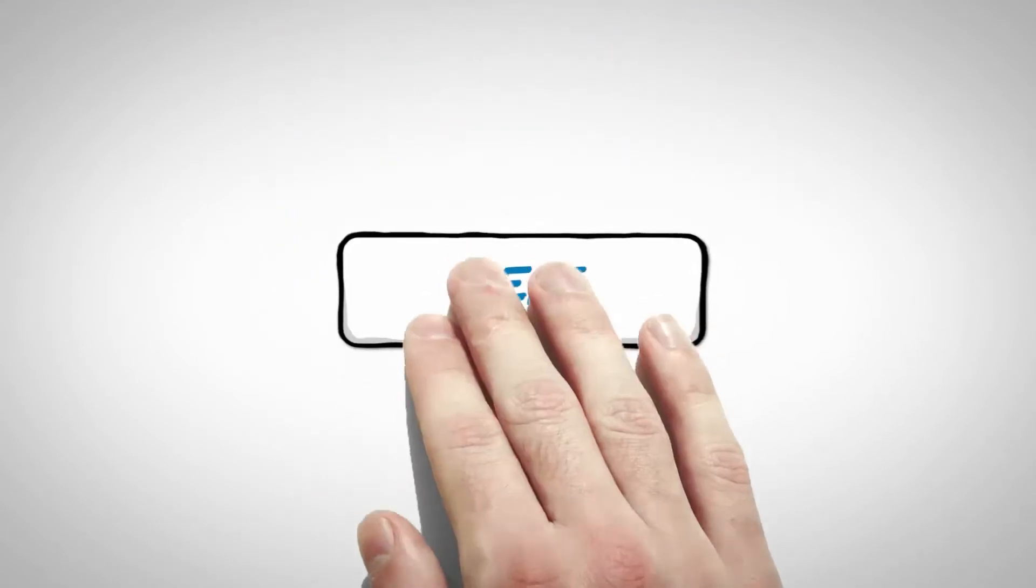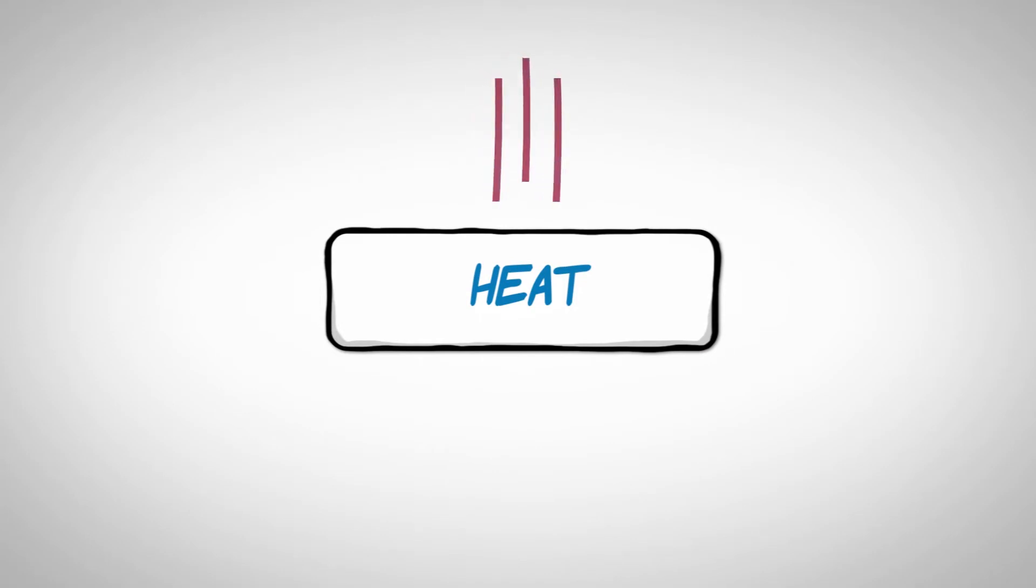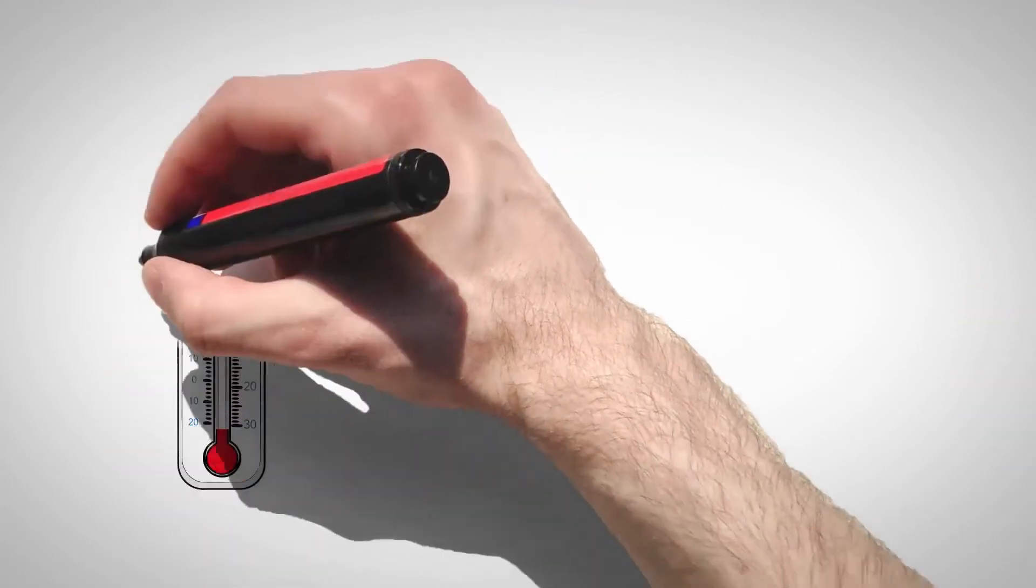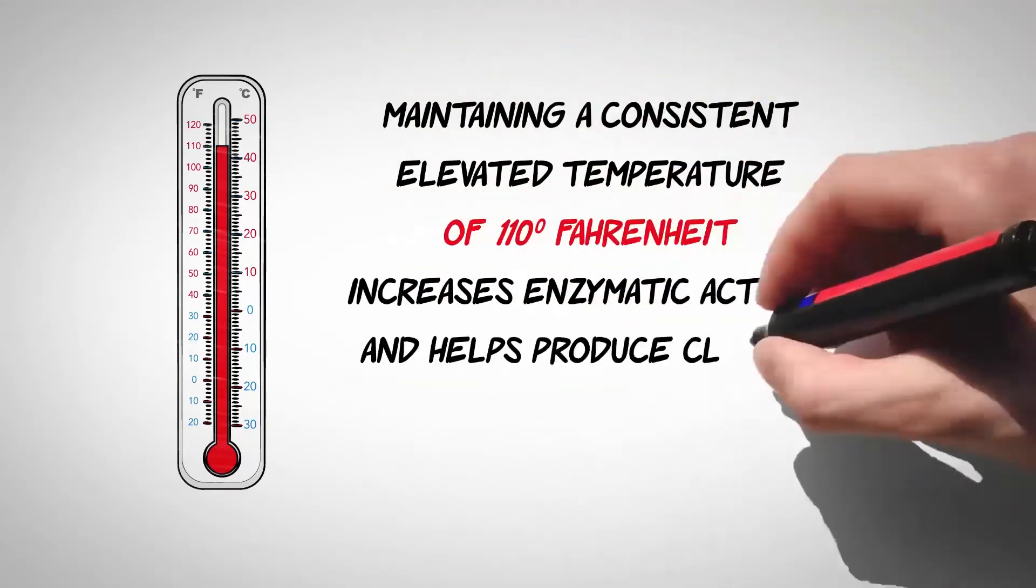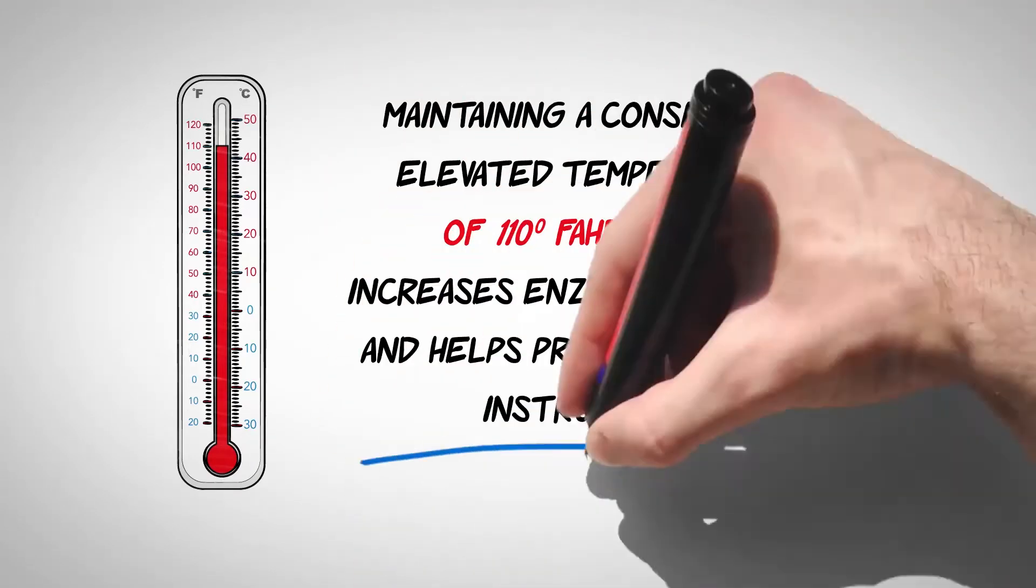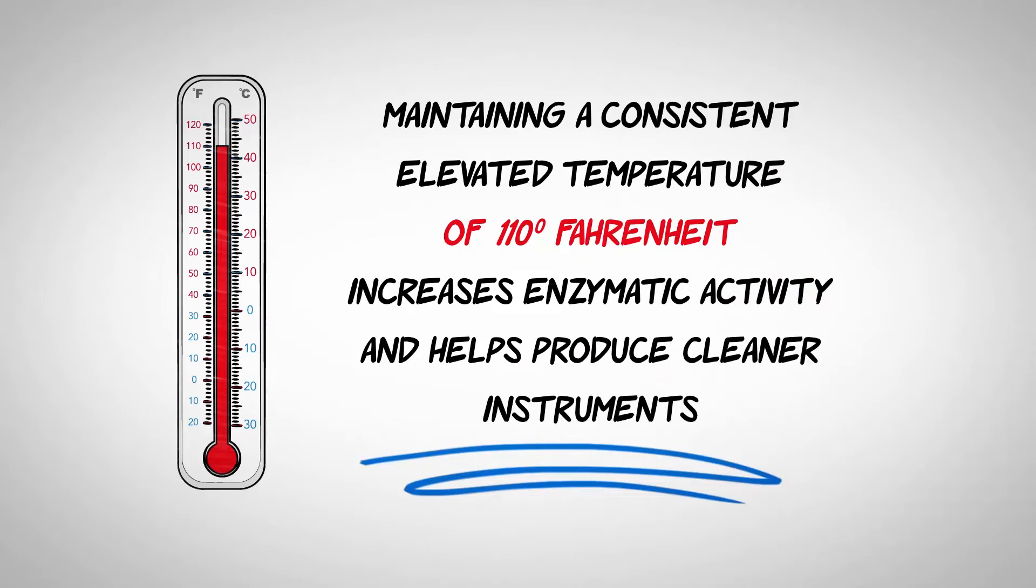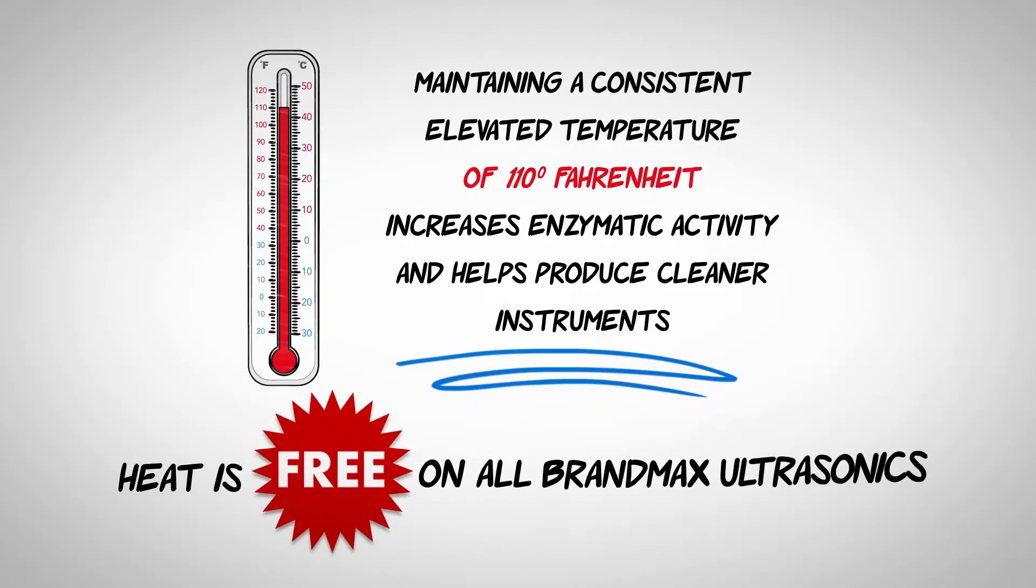Two, heat. Heat is crucial to the cleaning process. Maintaining a consistent elevated temperature of 110 degrees Fahrenheit increases enzymatic activity and helps produce cleaner instruments. Make sure your ultrasonic cleaner has heat. Heat is standard on all BrandMax TriClean ultrasonic cleaners.